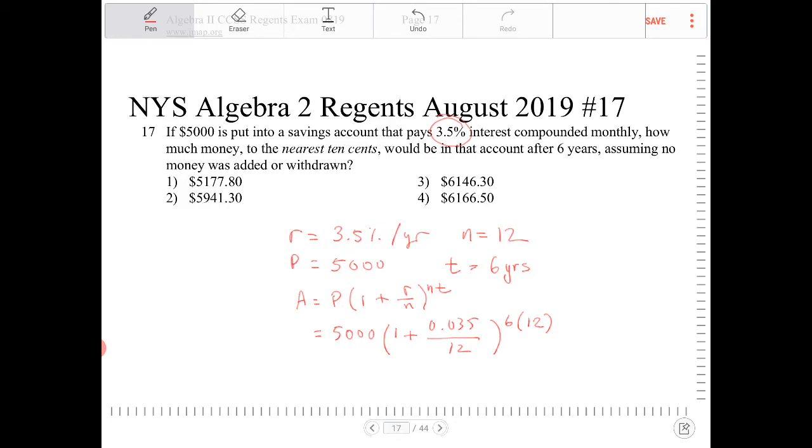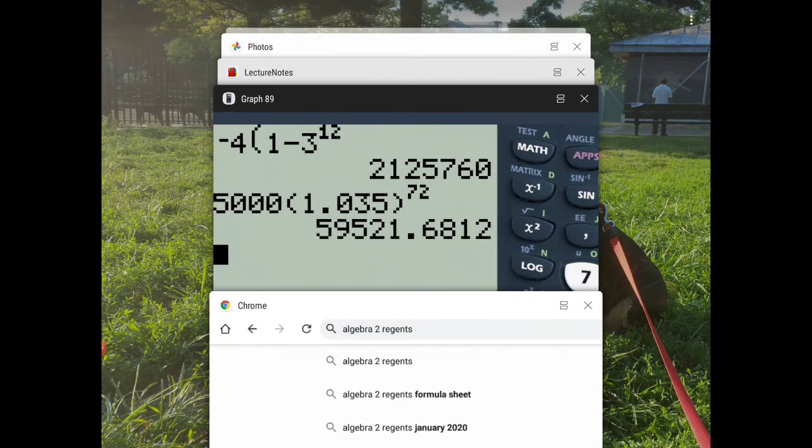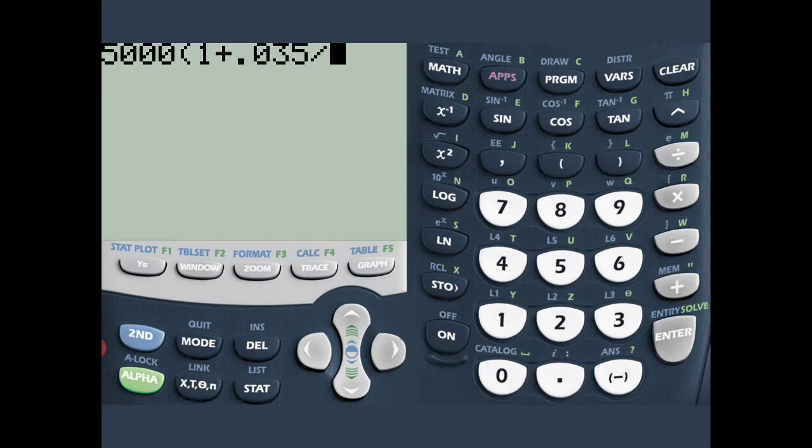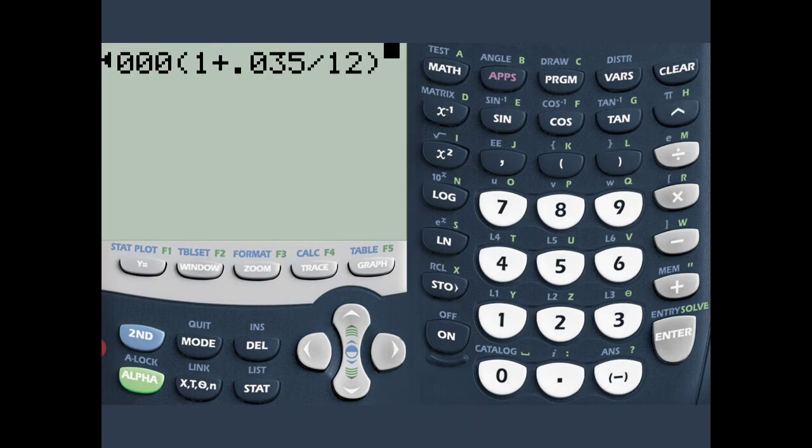So we're going to go to the calculator now. And we're going to type in 5,000 times 1 plus 0.035 divided by 12 to the power of 6 times 12.